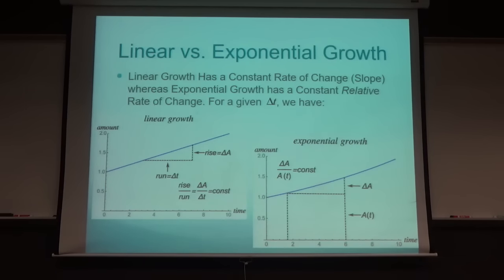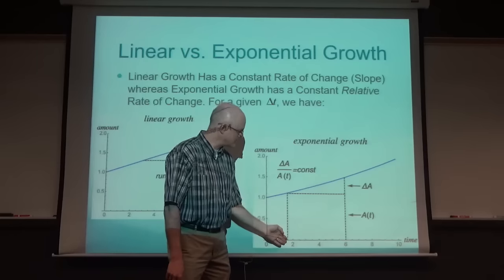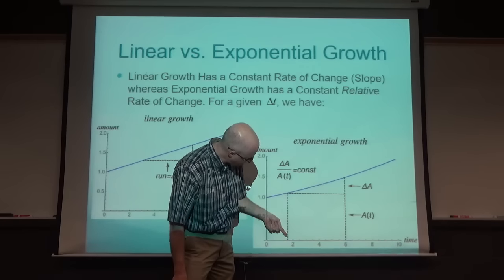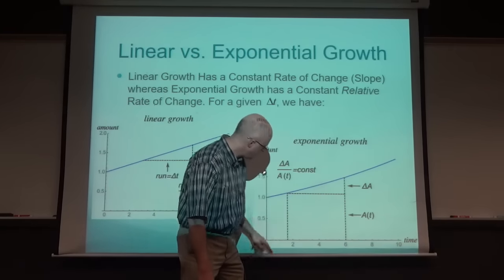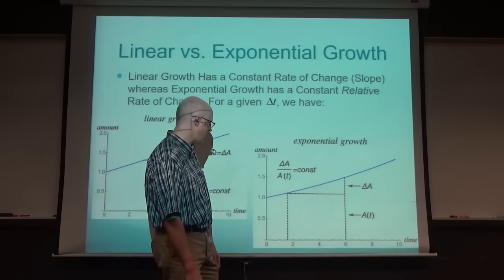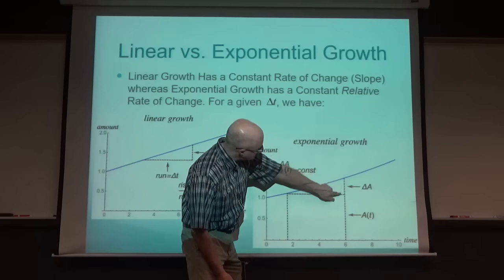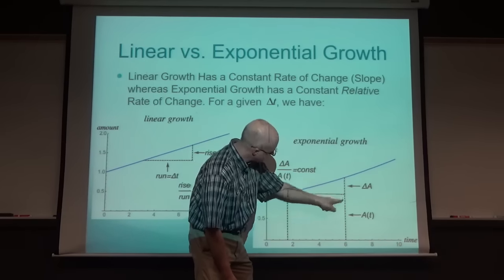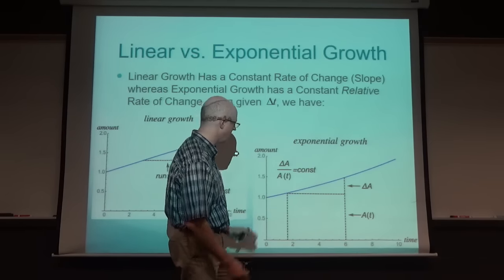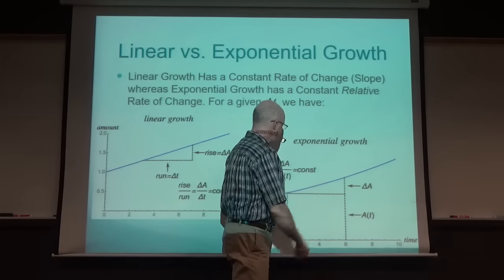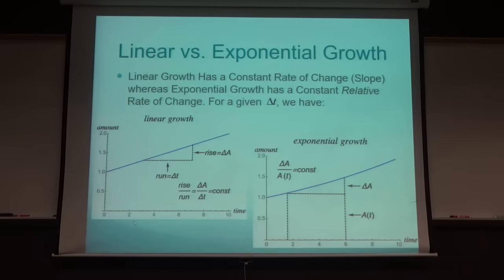With exponential functions it's a little more subtle. It's the change in the amount divided by the starting amount. Think of A(T) as the starting amount during a certain interval. If T increases by about 4.4, that's delta T. Delta A divided by A(T) is constant for a given delta T. Moving this interval back and forth for that fixed delta T, that ratio stays constant.